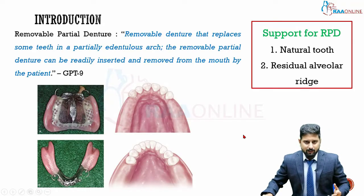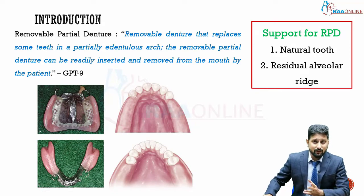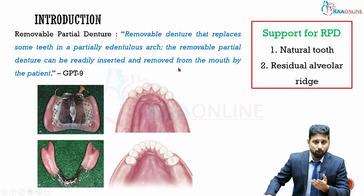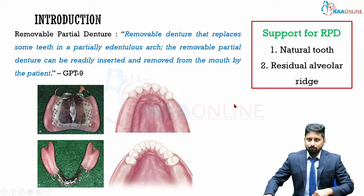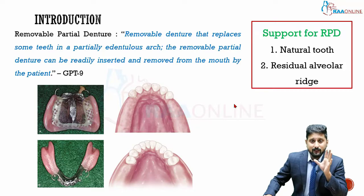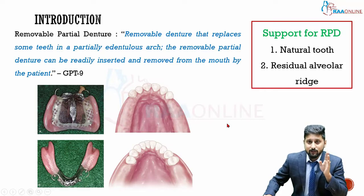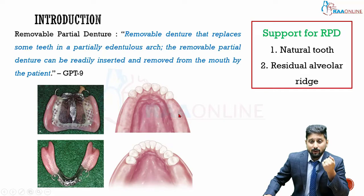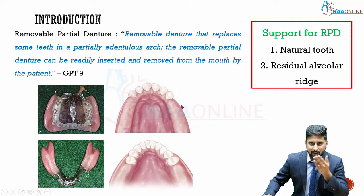A removable partial denture, according to the Glossary of Prosthodontic Terms, is a removable denture that replaces some teeth in a partially edentulous arch, and can be readily inserted and removed by the patient at will. When some teeth are still present in the arch and you are replacing only the missing teeth using a removable denture, it is called a removable partial denture because you are replacing a partially edentulous arch.